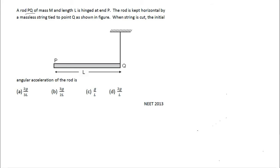A rod PQ of mass m and length L is hinged at end P. The rod is kept horizontal by a massless string tied to point Q. When the string is cut, the initial angular acceleration of the rod is: option A: 2G by 3L, option B: 3G by 2L, option C: G by L, option D: 2G by L.